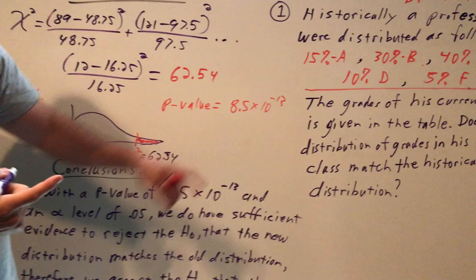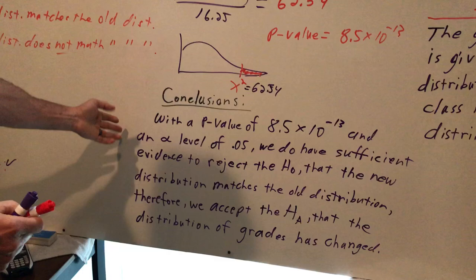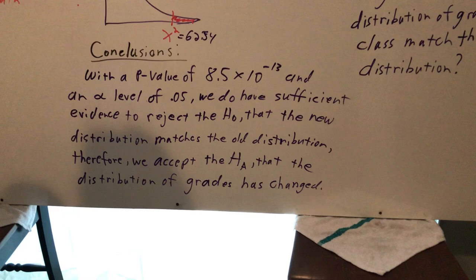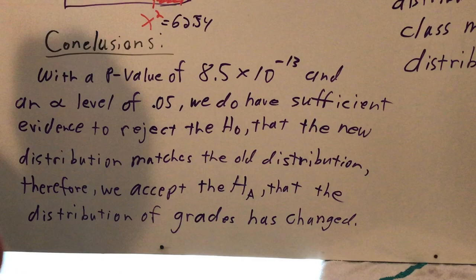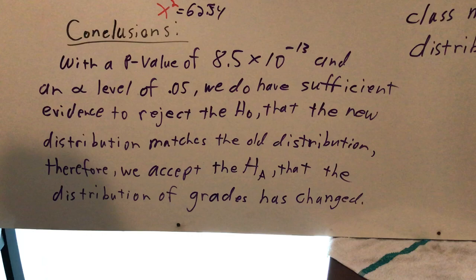So that's down here. I wrote my long conclusion sentence out already. With the p-value of 8.5 times 10 to the negative 13th and an alpha level of 0.05, we do have sufficient evidence to reject the null hypothesis that the new distribution matches the old. Therefore, we accept the alternative hypothesis that the distribution of grades has changed.